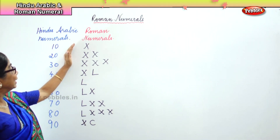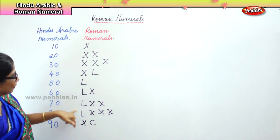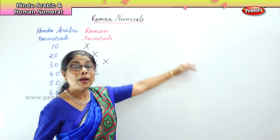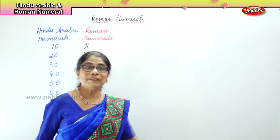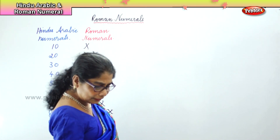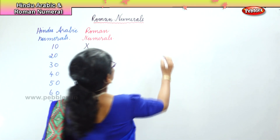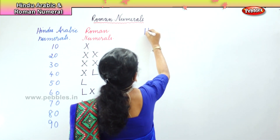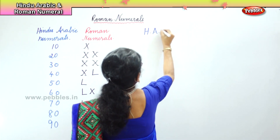So we learned to say 10, 20, 30, 40, 50, 60, 70, 80, 90. Now what are we going to do? We are going to do 100, 200, 300 — we build on. We are going to write the Hindu Arabic numeral alongside.